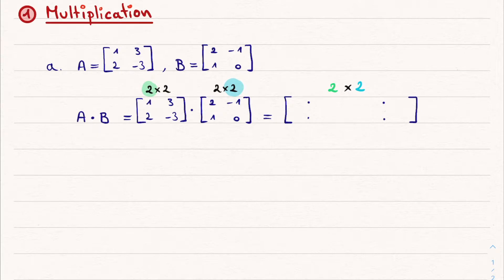And the procedure goes as follows. For the upper left element, which sits on the first row and the first column, we isolate the first row of A and the first column of B. Then, we multiply the corresponding elements and add them together. In this case, we get 1 times 2 plus 3 times 1.